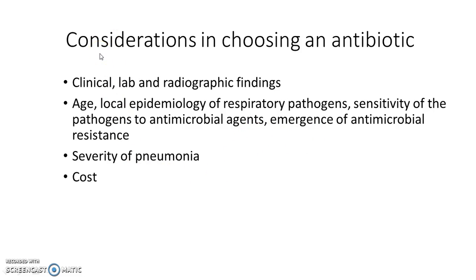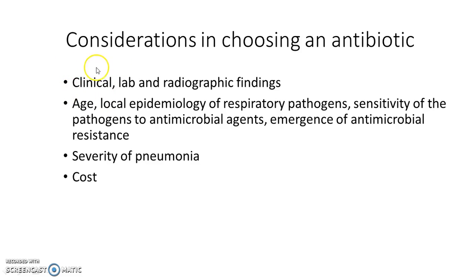What are the considerations we take in choosing an antibiotic to treat pneumonia? When we think the causative agent is a bacterium, we have to consider which antibiotic to choose to treat the condition. This will depend on clinical findings — from the history, physical examination, lab results, and radiographic findings from the chest X-ray or CT scan. We also need to look at the age of the patient.